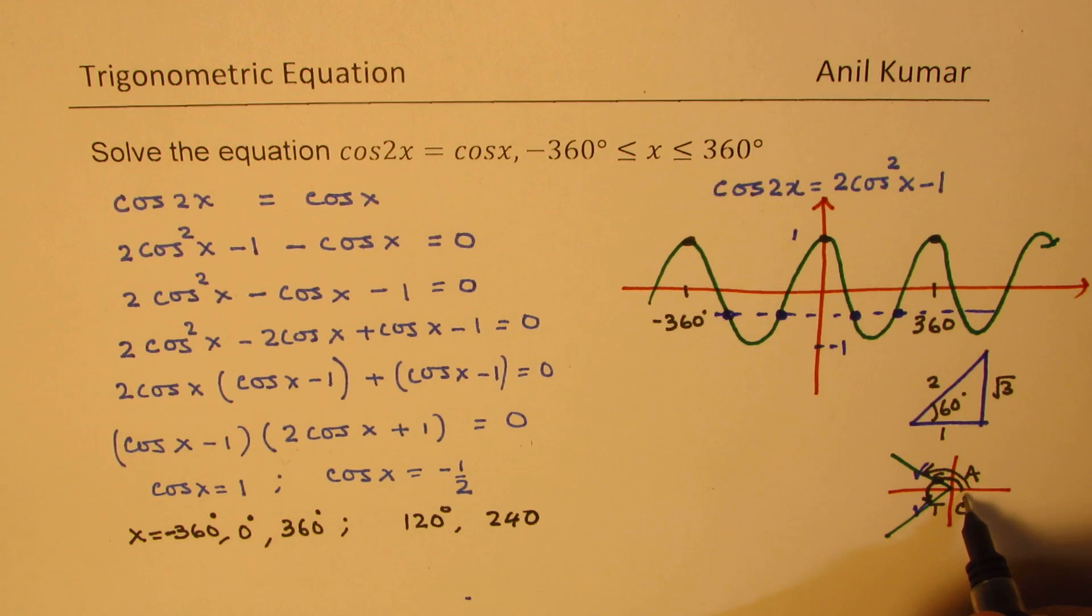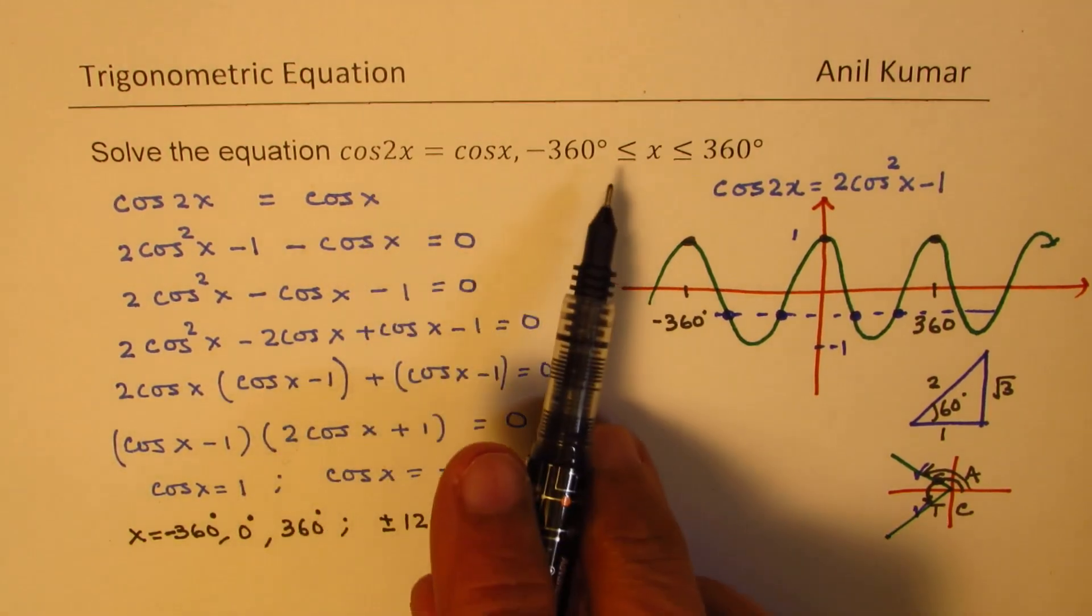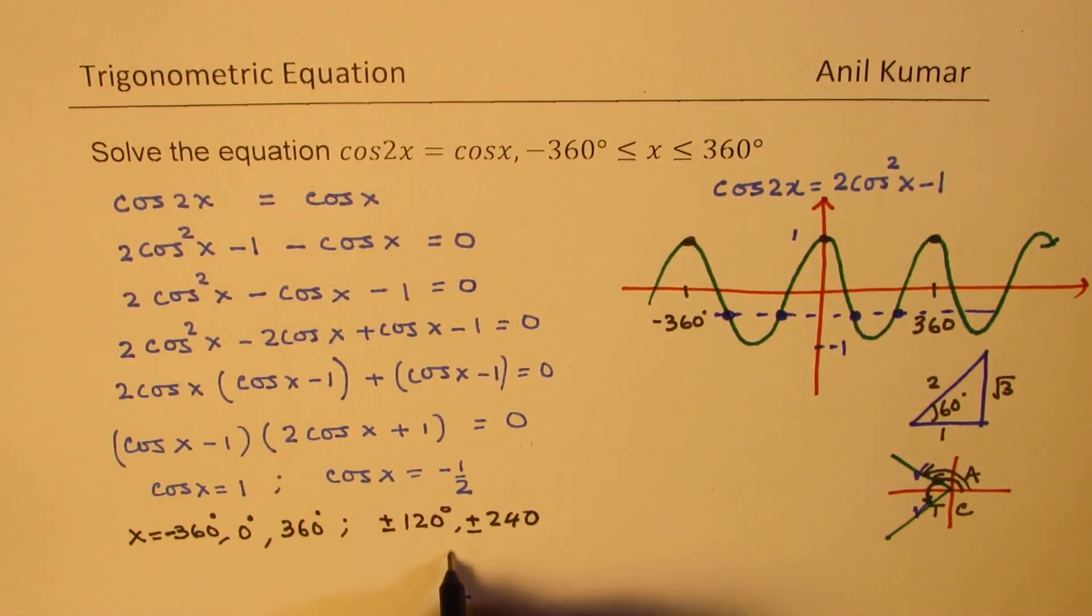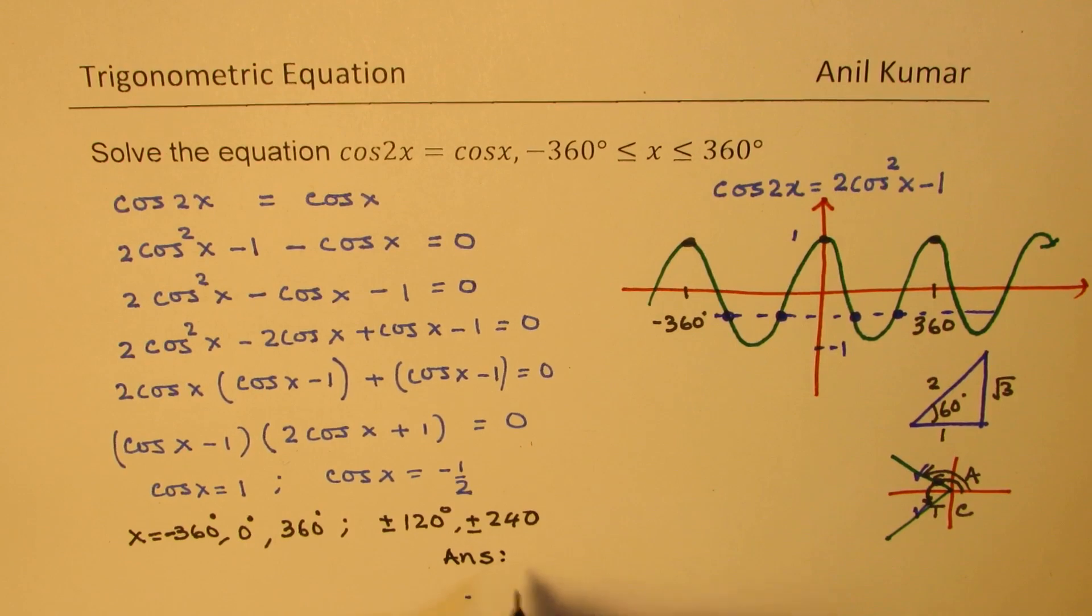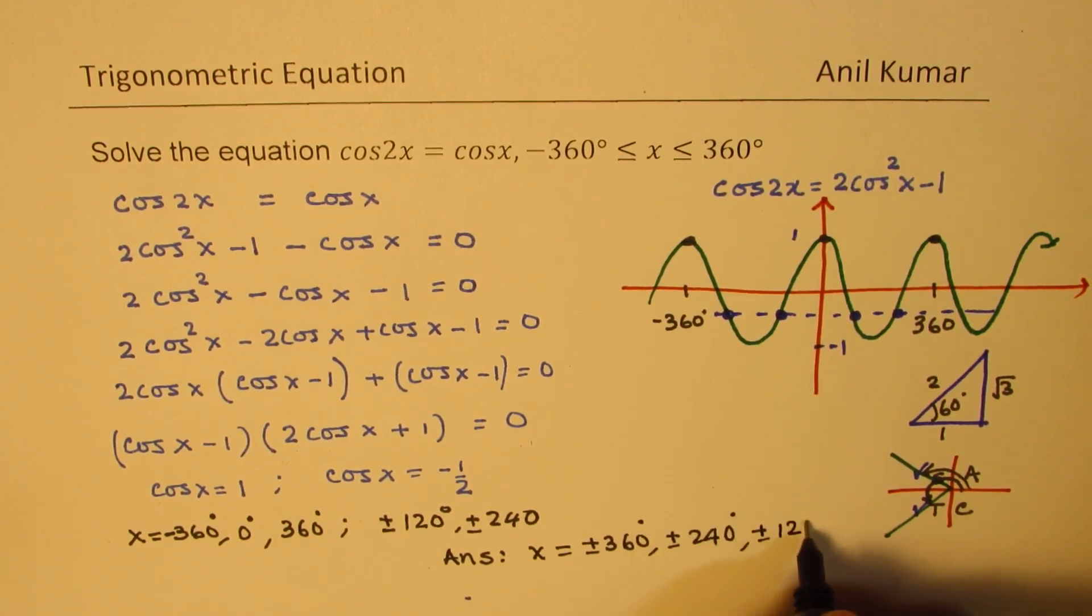And also if you go from this side, we have plus and minus, so both values. So these are all the solutions, which will satisfy this equation within the given domain. So our answer here is x equals plus minus 360 degrees, plus minus 240 degrees, plus minus 120 degrees and 0 degrees.